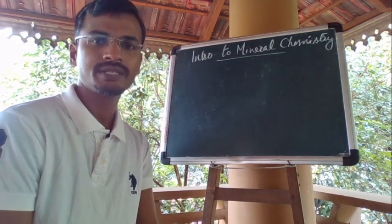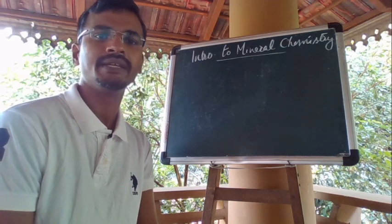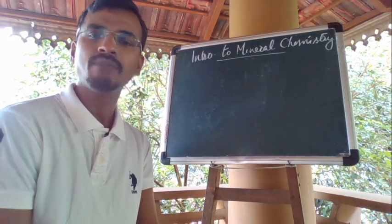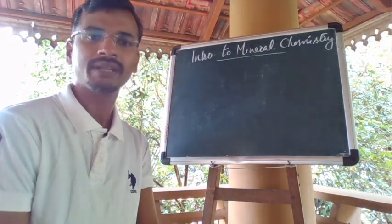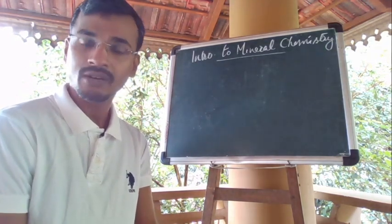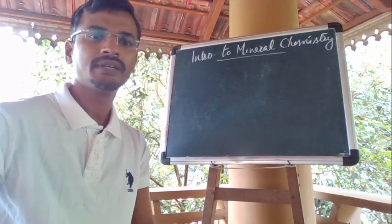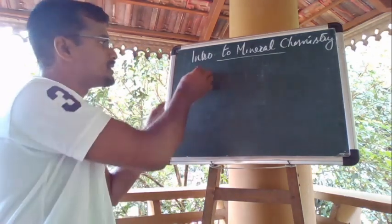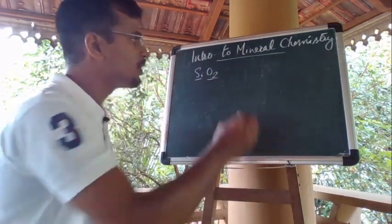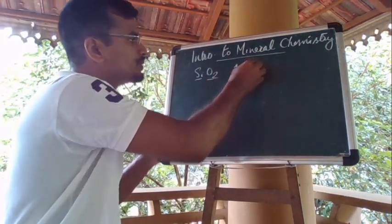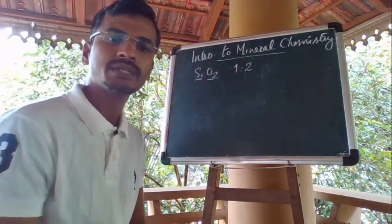Minerals must be crystalline solids. The atoms and/or ions that comprise crystalline materials are arranged and chemically bonded in a regular and repeating long-range pattern. All minerals have a definite chemical composition. A chemical composition may be written for any mineral. For example, a common mineral — quartz — is composed of silicon and oxygen in a ratio of 1 to 2.